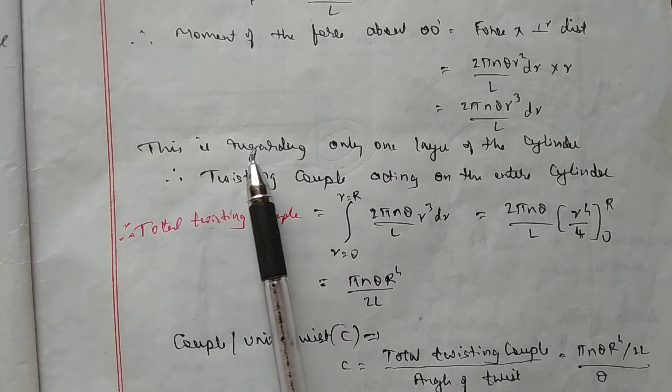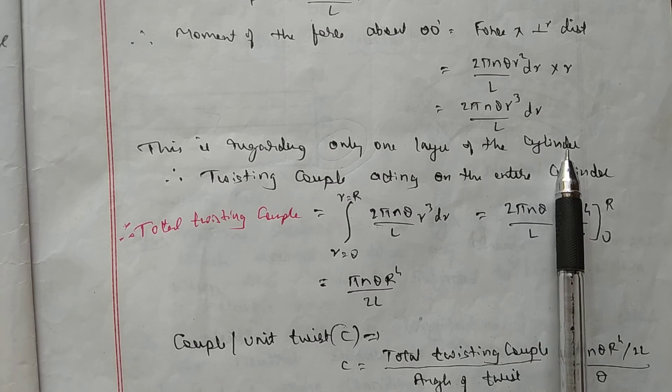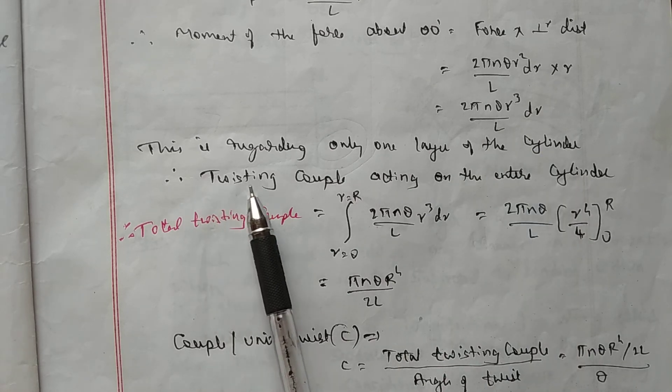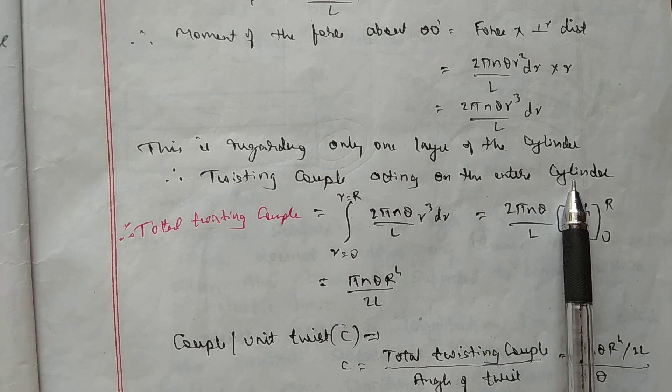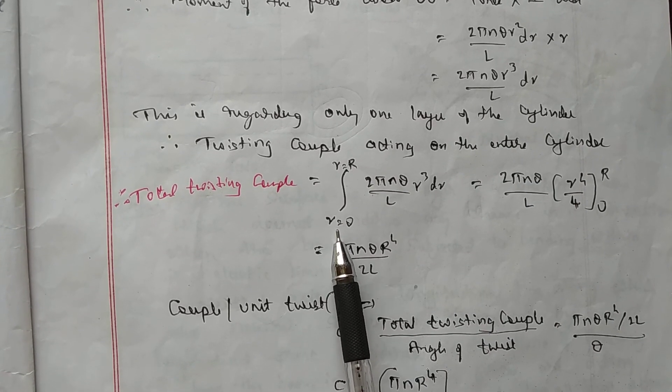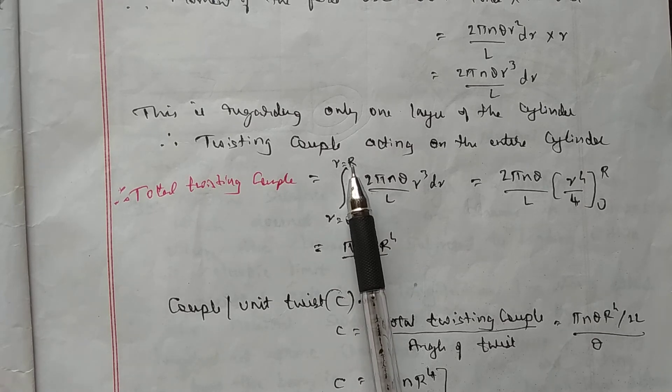Now this is regarding only one such concentric cylindrical layer which we have taken into account. Therefore, the twisting couple acting on the entire cylinder, now earlier it was a small layer, now over the entire layer, we have to integrate between r equals 0 to r equals capital R.